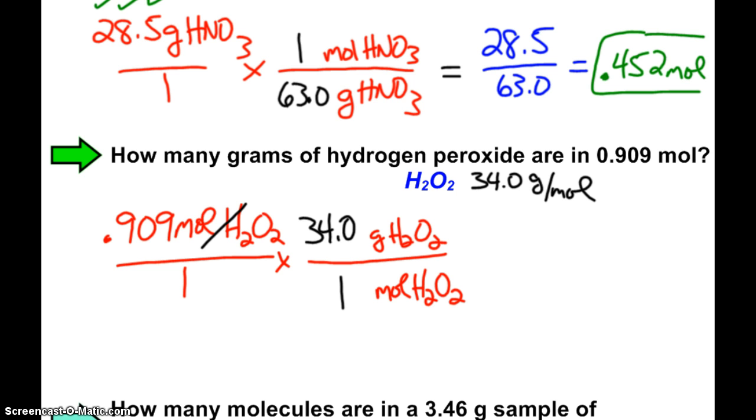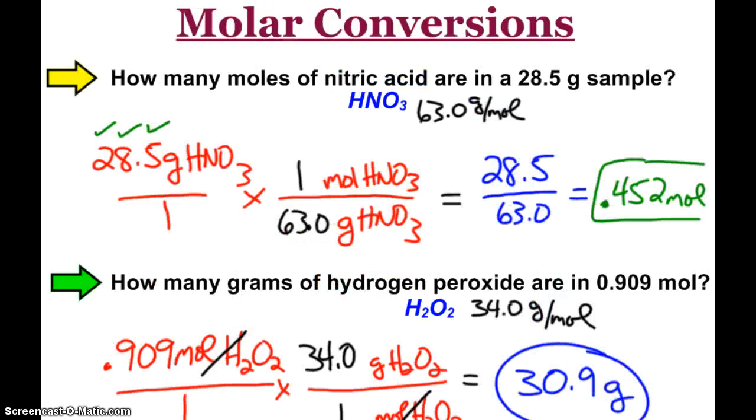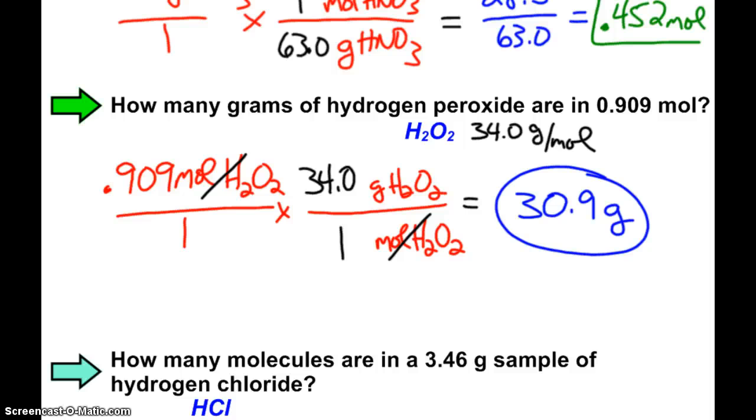And so, yes, multiply across the top, 0.909 times 34, I get 30.9 grams. So, again, dimensional analysis shows you what my little map showed you. Moles times molar mass will give you the mass of the substance.